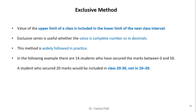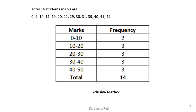Exclusive method: the upper limit of a class is included in the lower limit of the next class interval. This exclusive series is useful when the values are whole numbers or decimals, and is widely followed in practice. For example, with 14 students who secured marks between 0 and 50, a student who secured 20 marks would be included in the class 20–30 but not in 10–20. So 0–9 is included in the first class, 10–19 in the next, and so on. This method gives proper class intervals.